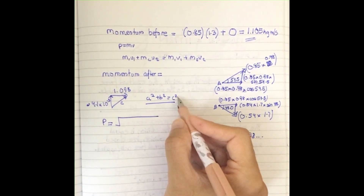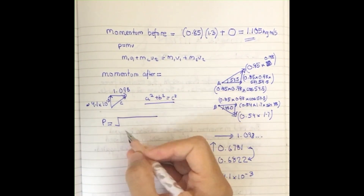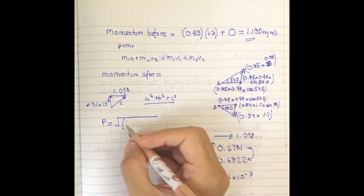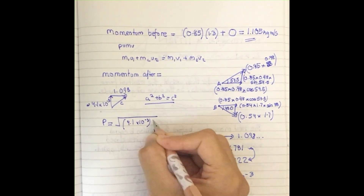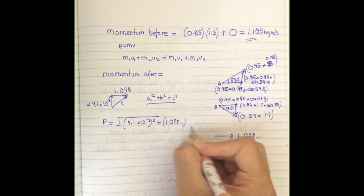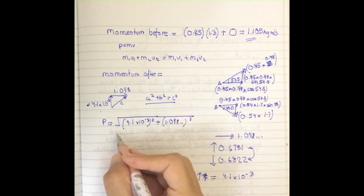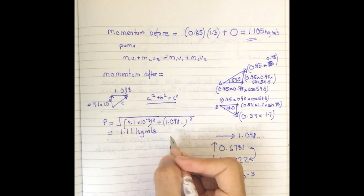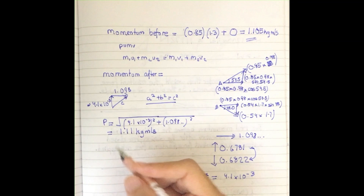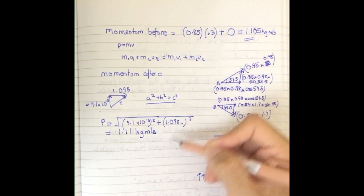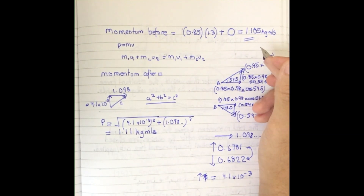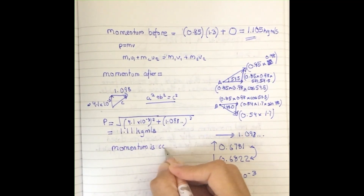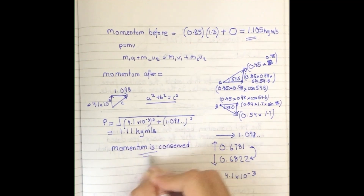Taking either component as a or b, I calculate: √((4.1×10⁻³)² + (1.098)²), which gives 1.11 kg·m/s. Comparing the momentum before and after the collision, both values are essentially the same. Therefore, momentum is conserved — and that is the final answer.